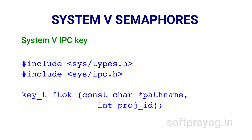For creating a System 5 semaphore, we first need a System 5 IPC key. We can create a System 5 IPC key with the ftok function. The first parameter is a filename — this file must exist and be accessible; the contents of the file are immaterial. The second parameter is an integer project ID; only the last 8 bits are used and these must not be zero, so passing a value between 1 and 255 is fine. ftok returns a System 5 IPC key.